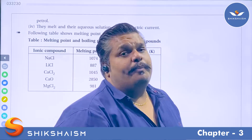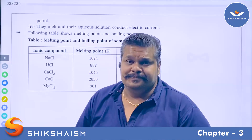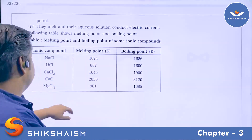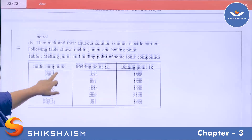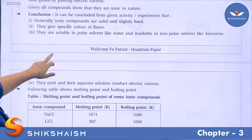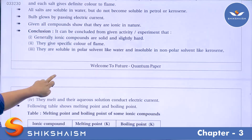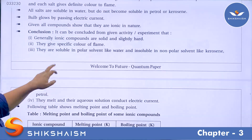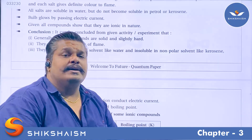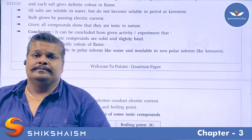These are the important properties that ionic compounds possess. These properties are listed as conclusions derived from the experiment. This was the experiment to determine the chemical properties of ionic compounds.